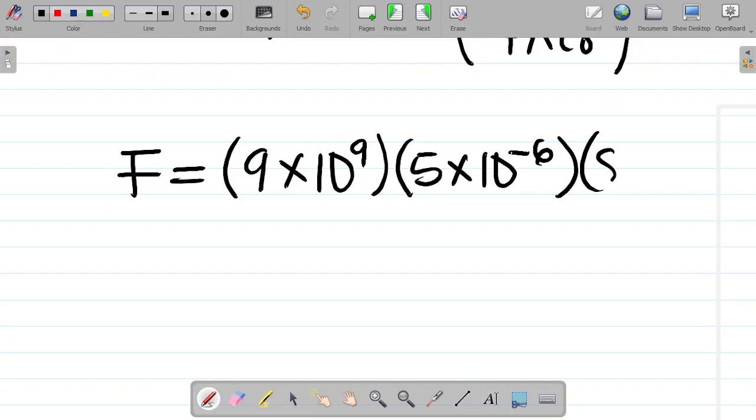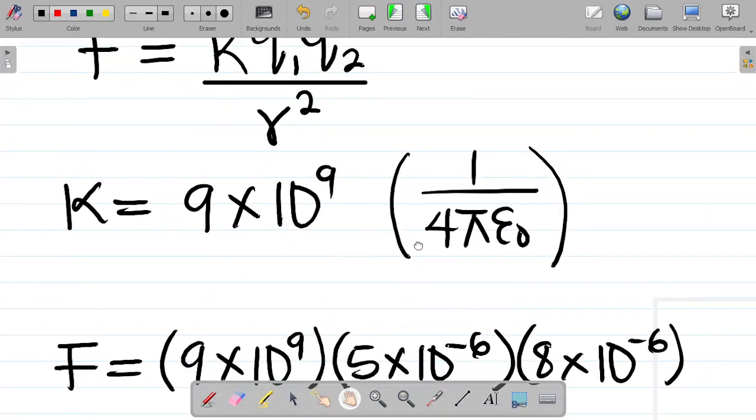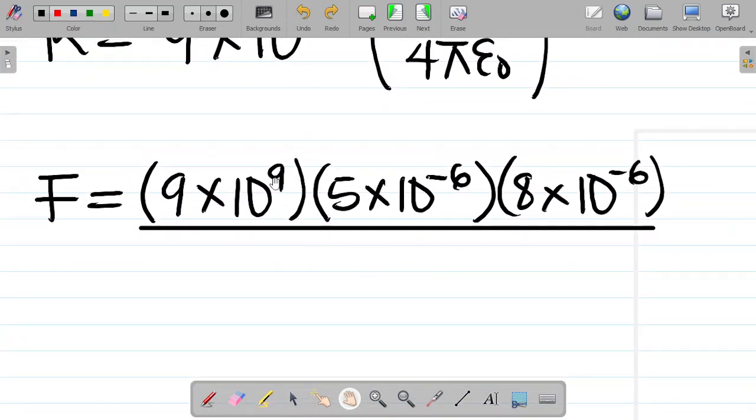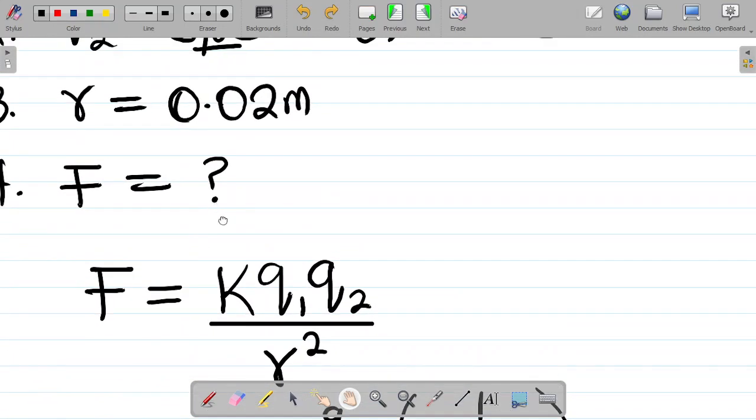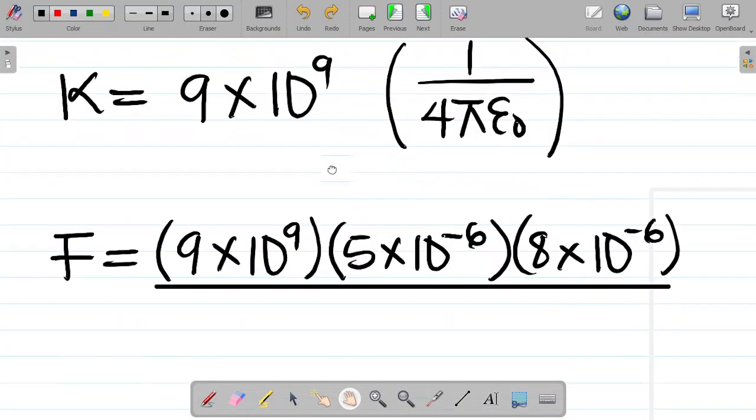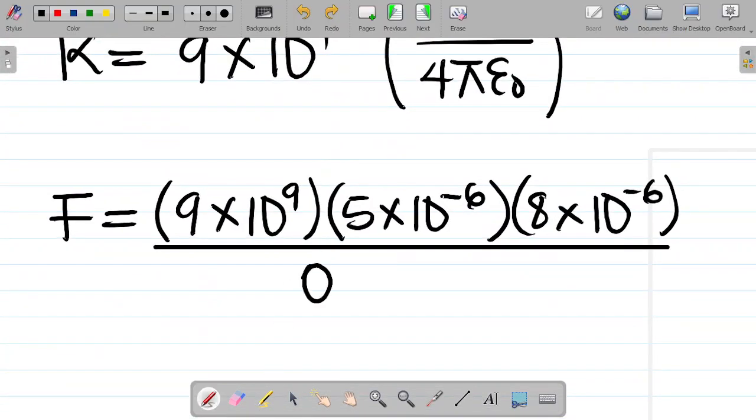Into Q2, 8 times 10 to the power minus 6. So all of this into R squared. The value of R is 0.02. So I have R as 0.02, that's R squared. So we have this.